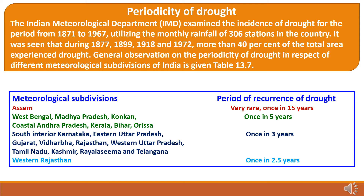In states like South Interior Karnataka, Eastern Uttar Pradesh, Gujarat, Vidarbha of Maharashtra, Rajasthan, Western Uttar Pradesh, Tamil Nadu, Kashmir, Rayalaseema, and Telangana, drought occurs once in 3 years. In Western Rajasthan, the period of occurrence of drought is once in 2.5 years.